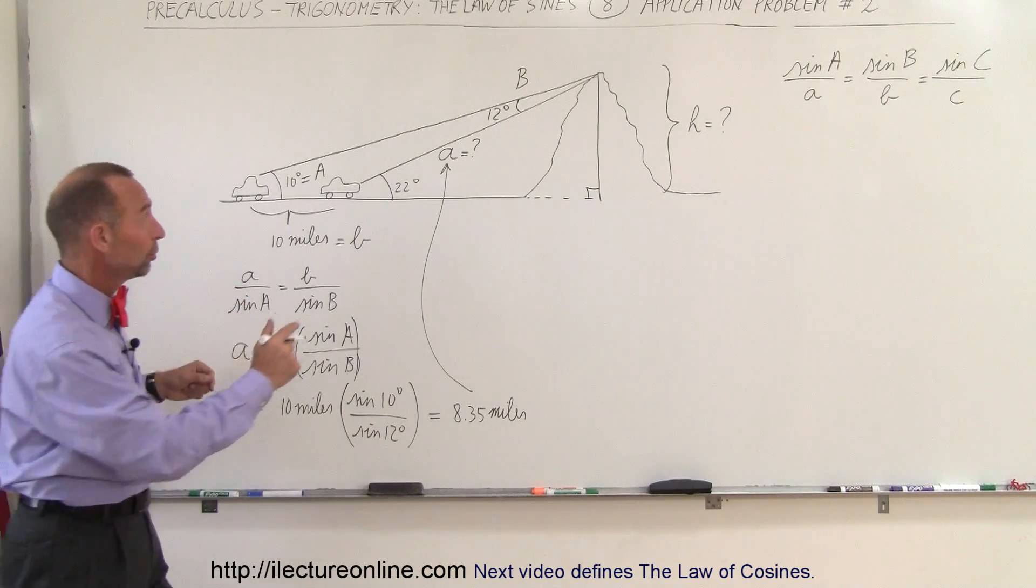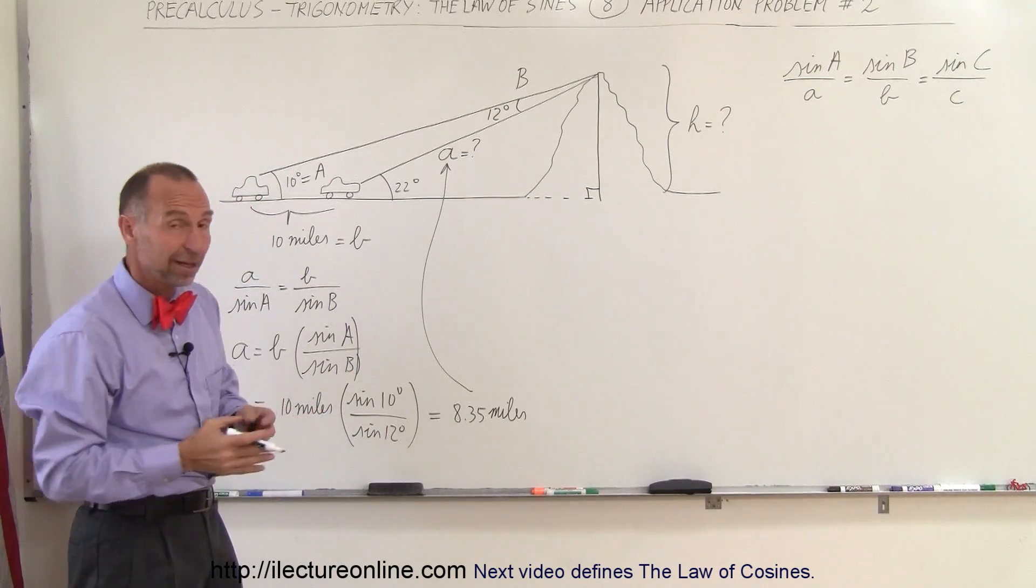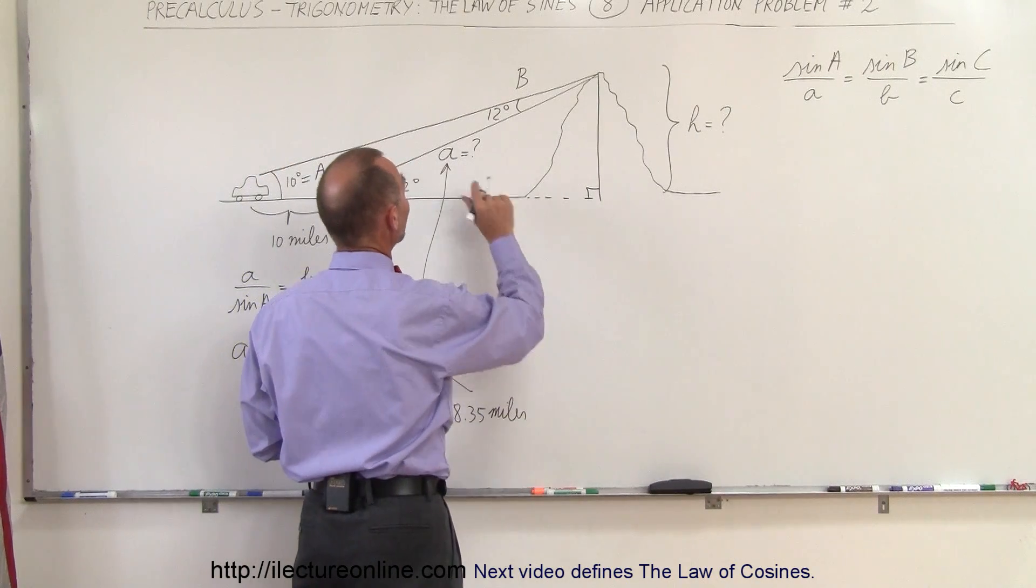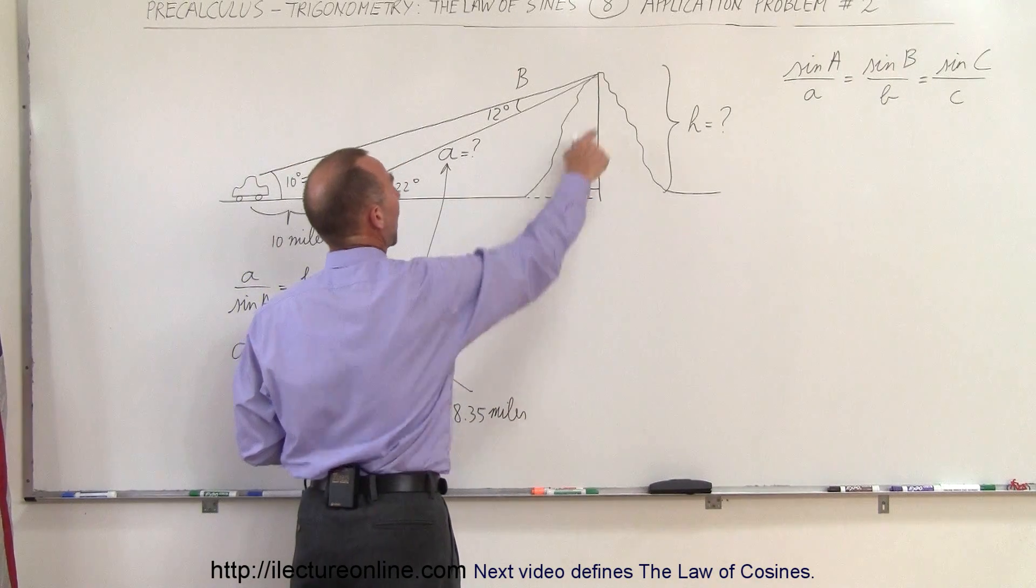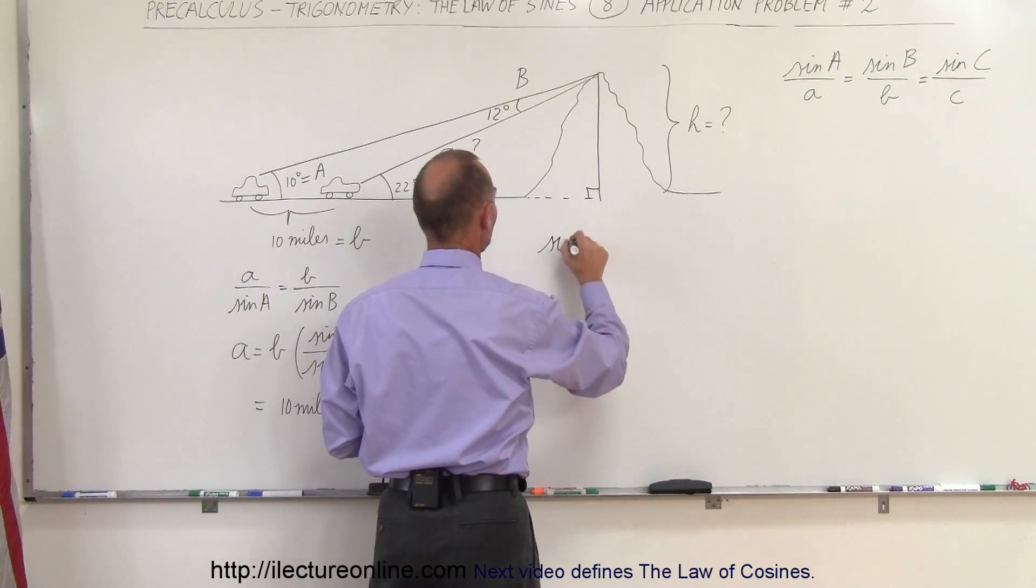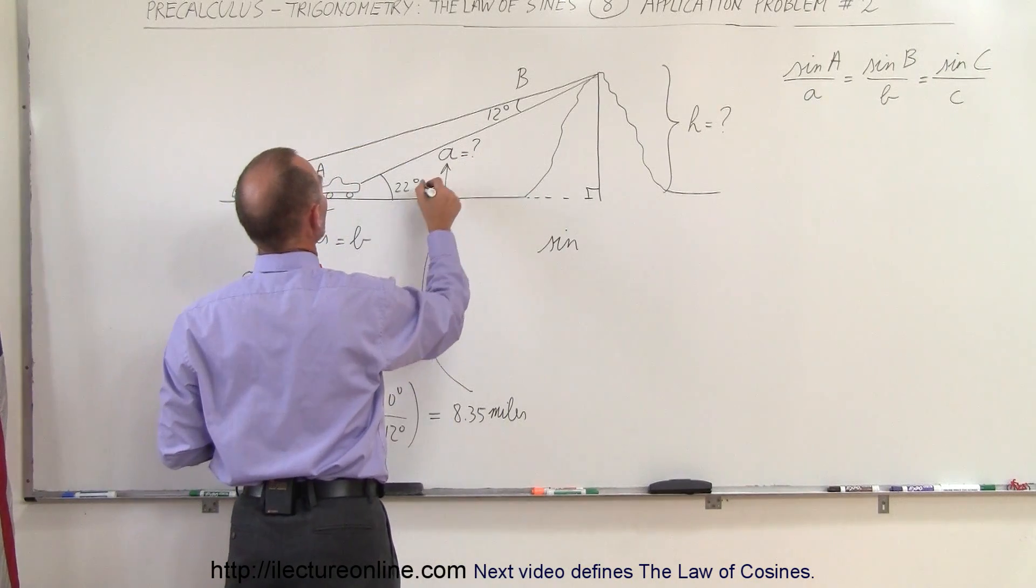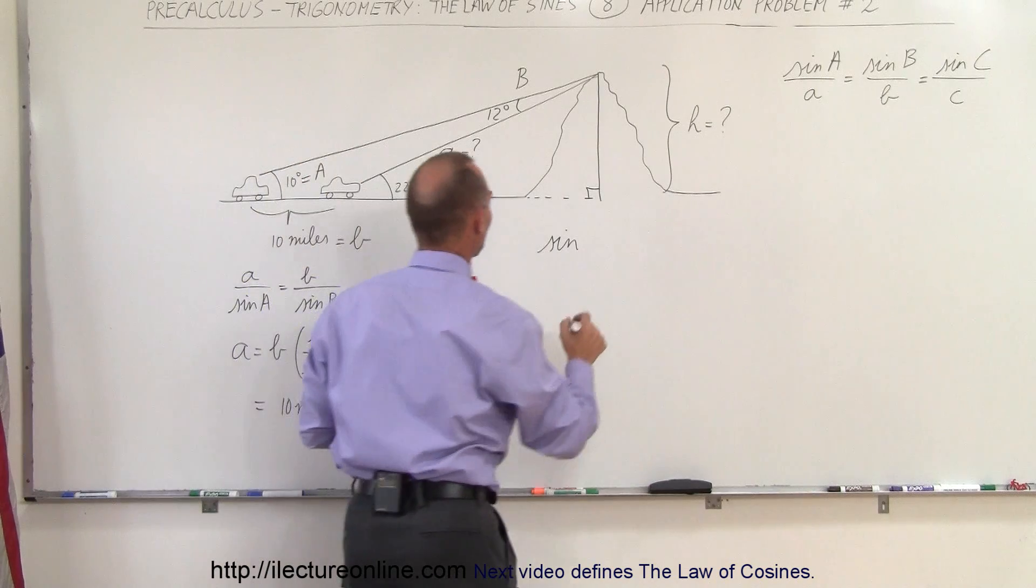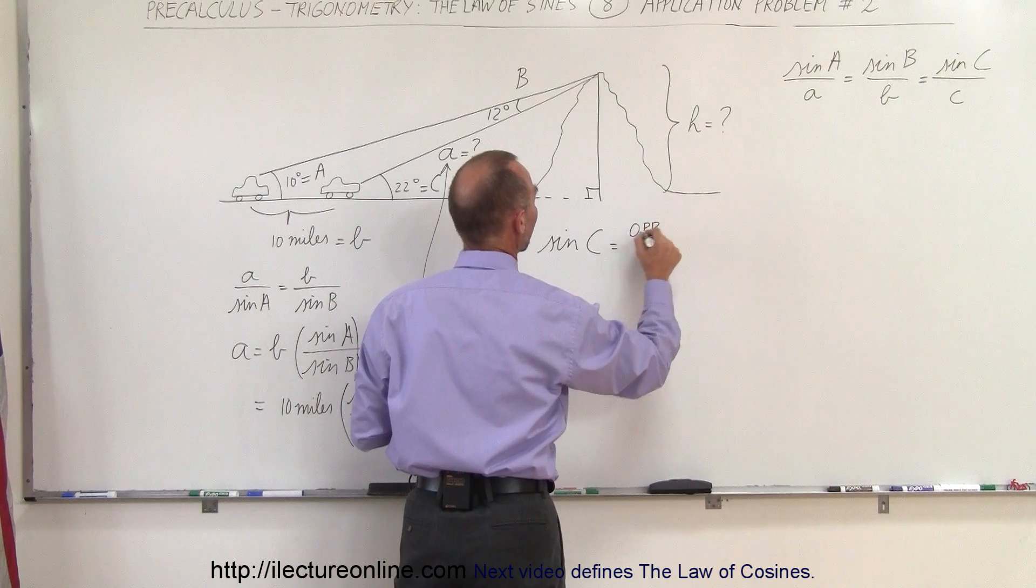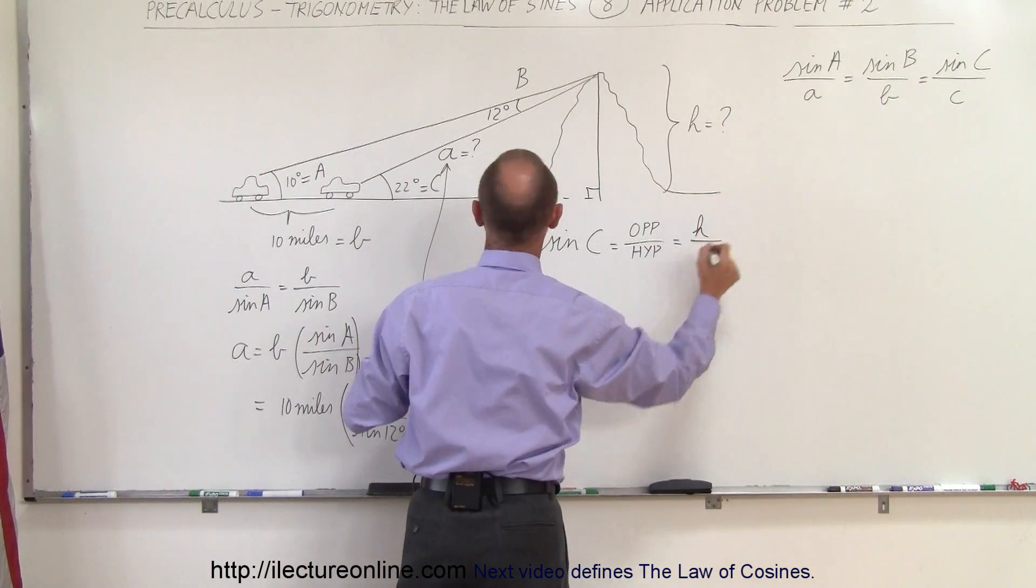Now we have to figure out what H is equal to. We're going to use this triangle, and now we no longer have to use the Law of Sines. We can simply use sine and cosine for right angle triangles. Since this is the opposite side to this angle, we're going to use the sine. The sine of C, by definition, is equal to the ratio of the opposite side divided by the hypotenuse.